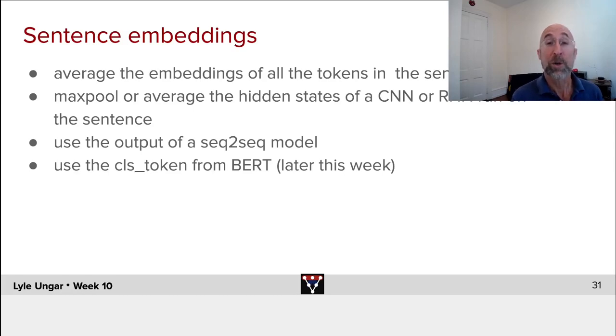One can also take all of the hidden states of a convolutional neural net that's run over the sentence, or a recurrent neural net run over the sentence, and again take the average of them, or often you take the maximum of them.